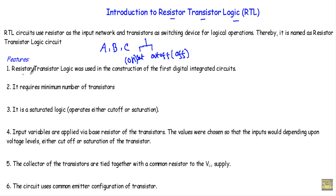Now I will show you some features of this RTL logic family. First, Resistor Transistor Logic was used in the construction of the first digital integrated circuit. Second, it requires a minimum number of transistors — since the circuit uses only resistors and transistors, we will require a minimum number of transistors.